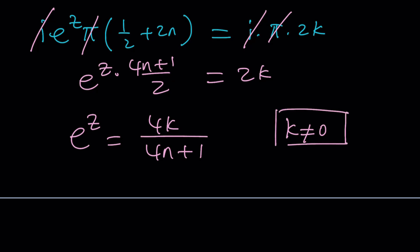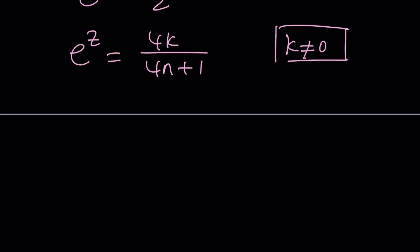And if n is 0, then we're going to get e to the z equals 4k, which is fairly simple, right? Now we're going to make some assumptions, and the second case we don't cover is actually fairly easy, you can do it.